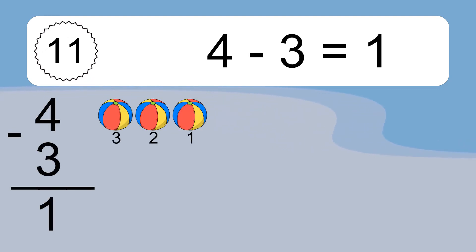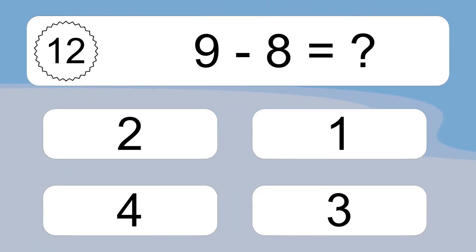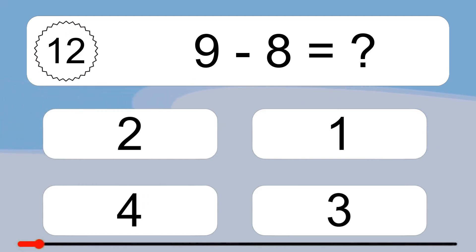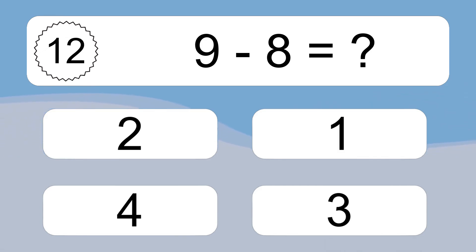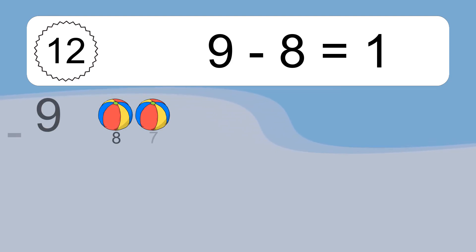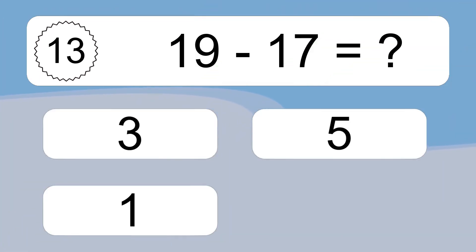4 minus 3 equals what? 4 minus 3 equals 1. Let's count it: 3, 2, 1.